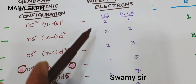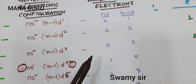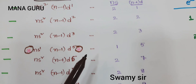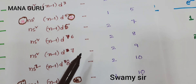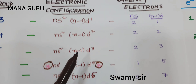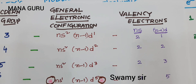Here, S electrons are 2 and (N-1)D electrons are 1. This is the distribution of electrons in the respective groups. Now is the time to enter into how to find out the position of an element based on this data.